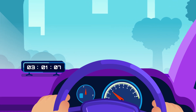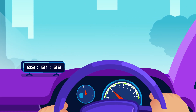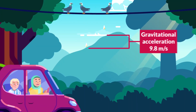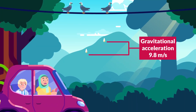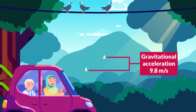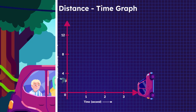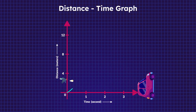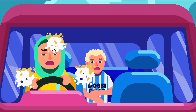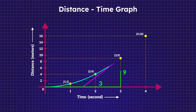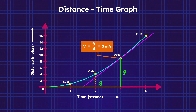A similar graph also appears when you're plotting a free-falling object, whose motion is affected by gravitational acceleration g of 9.8 meters per second squared. The speed is 9.8 meters per second faster every second, making the curve steeper. Since the speed is always changing, we're only able to calculate instantaneous speed.